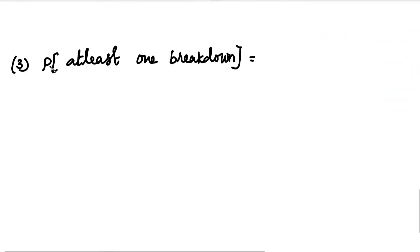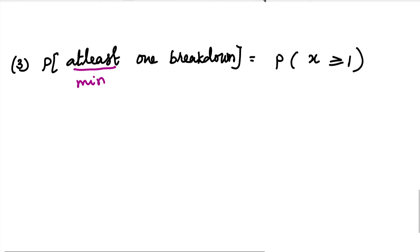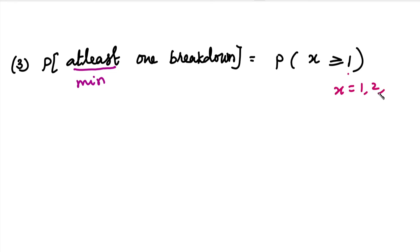For the third part, we find the probability of at least one breakdown — meaning a minimum of one breakdown. We need P(X ≥ 1), which covers X = 1, 2, 3, 4, and so on.